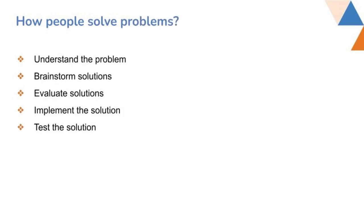Next comes how to solve the problem. A programmer starts by understanding the problem and continuously evaluating what it is about. Brainstorming comes next — even when working solo, thinking about different solutions can be called brainstorming. You may have two or three possible solutions for certain situations, so you brainstorm all of them and then evaluate how each particular solution will help.